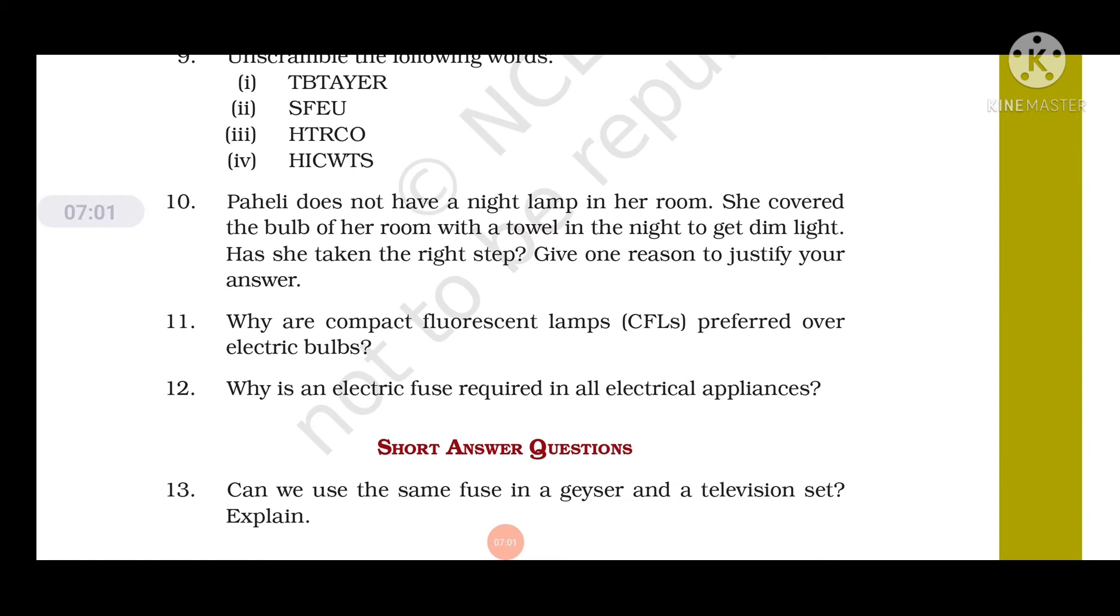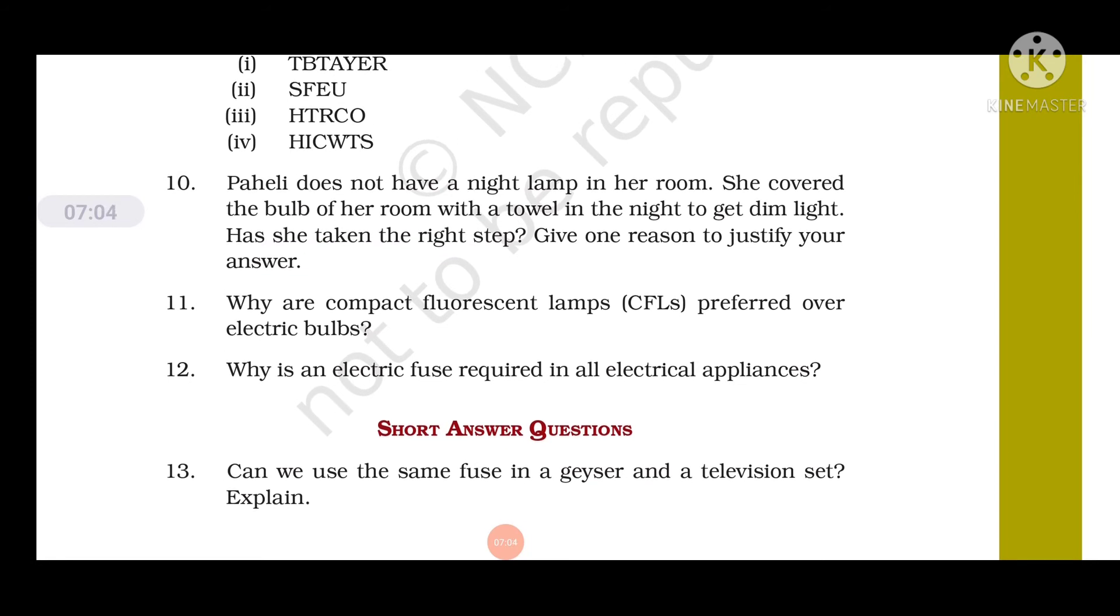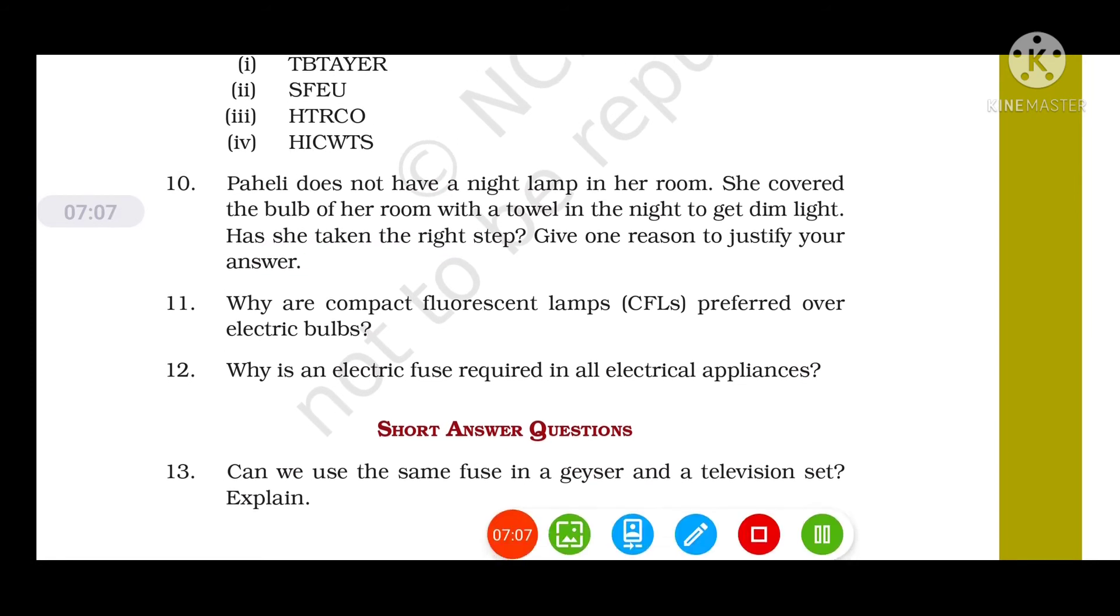Question number 11: Why are compact fluorescent lamps, CFLs, preferred over electric bulbs? Compact fluorescent lamps are preferred over electric bulbs because CFLs consume less energy and they don't waste energy in the form of heat. Question number 12: Why is an electric fuse required in all electrical appliances? It is required because it acts as a safety device and it checks excessive electric current flow.